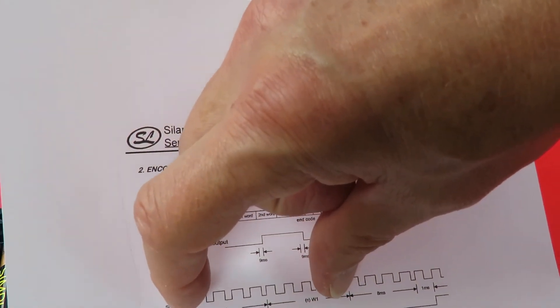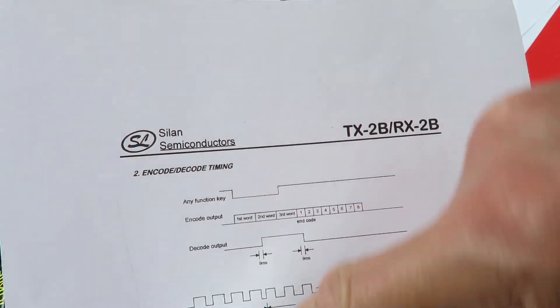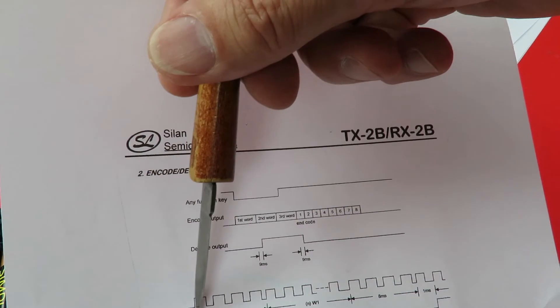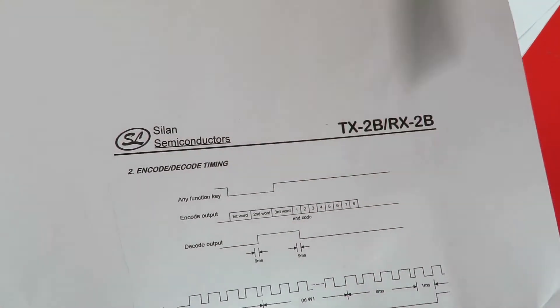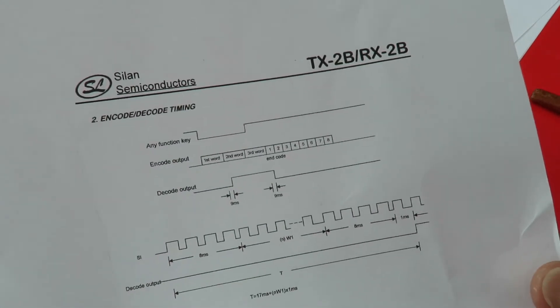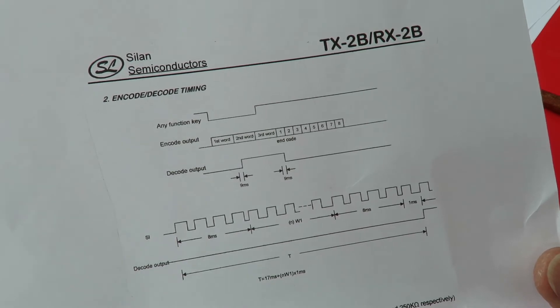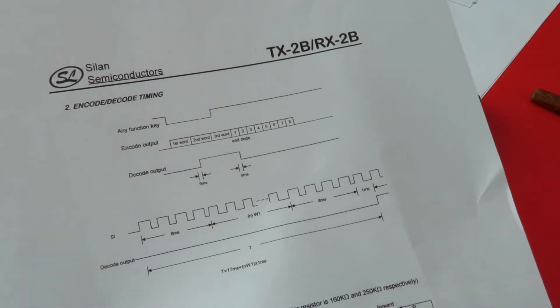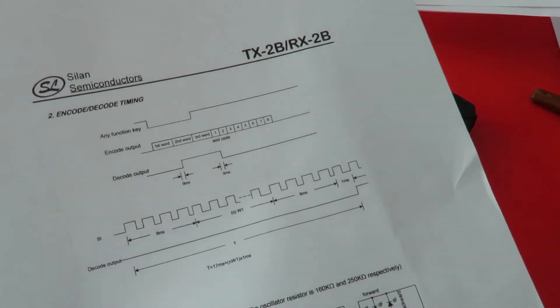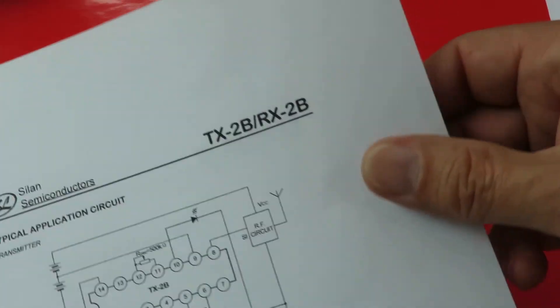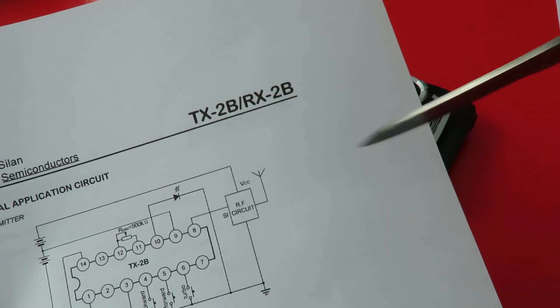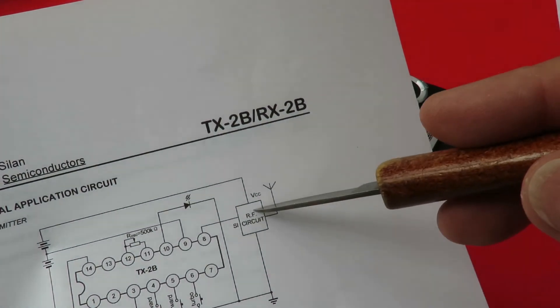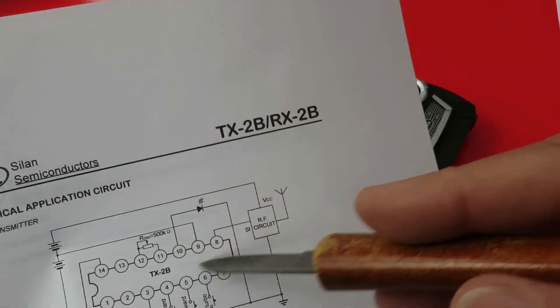The 27 megahertz, 35 megahertz, 40 megahertz - when you're talking about that, you're talking about the radio frequency circuitry, which has nothing to do with that chip directly.